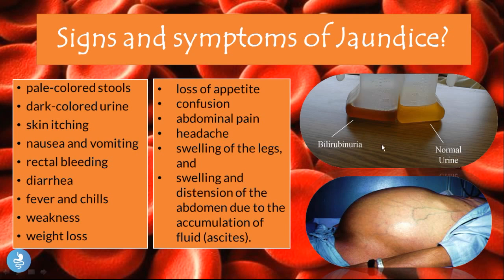This dark-colored urine is called bilirubinuria, because we have an excess amount of bilirubin in the urine — with normal urine shown as a reference. A patient with ascites shows accumulation of fluid in the abdomen.